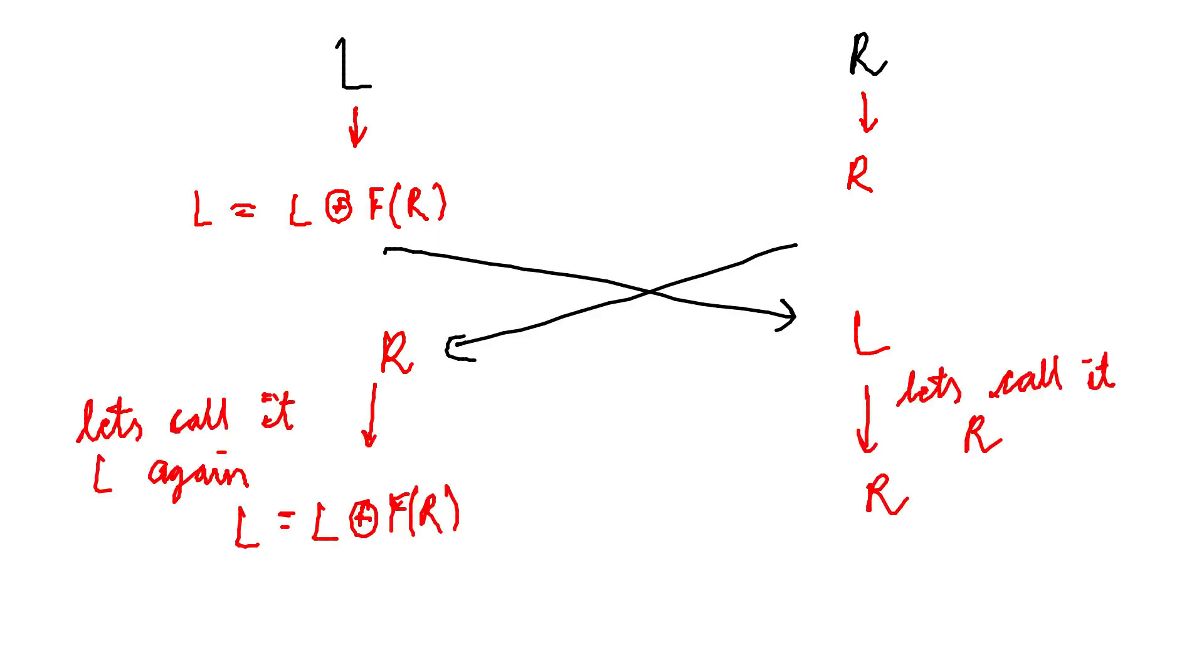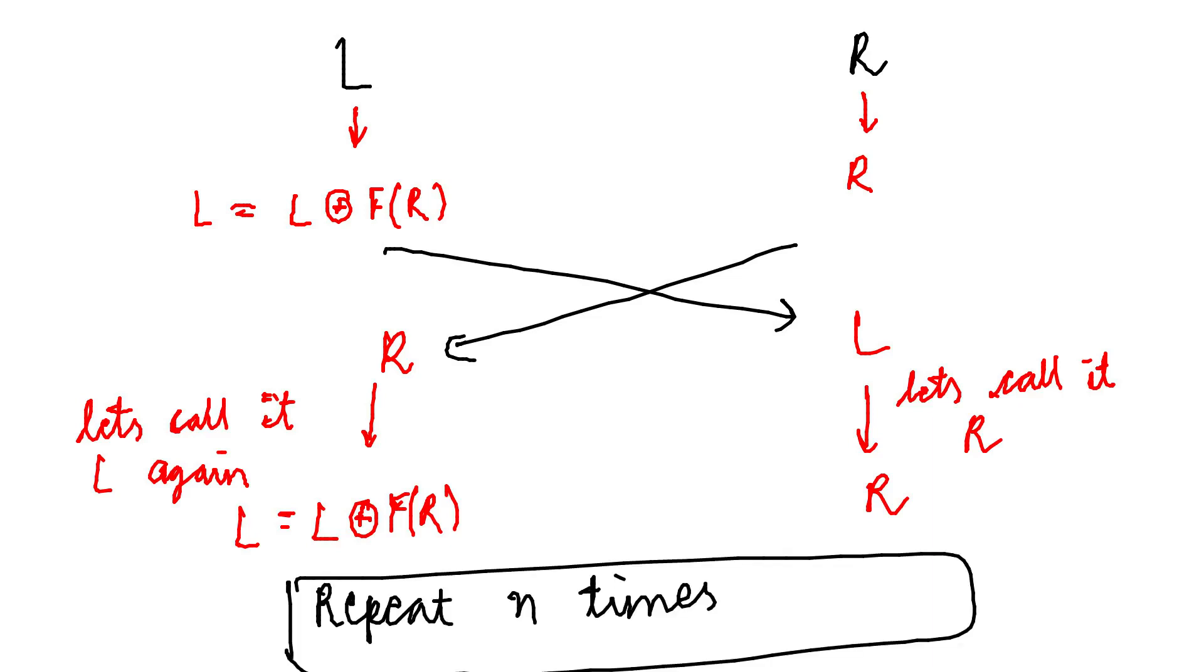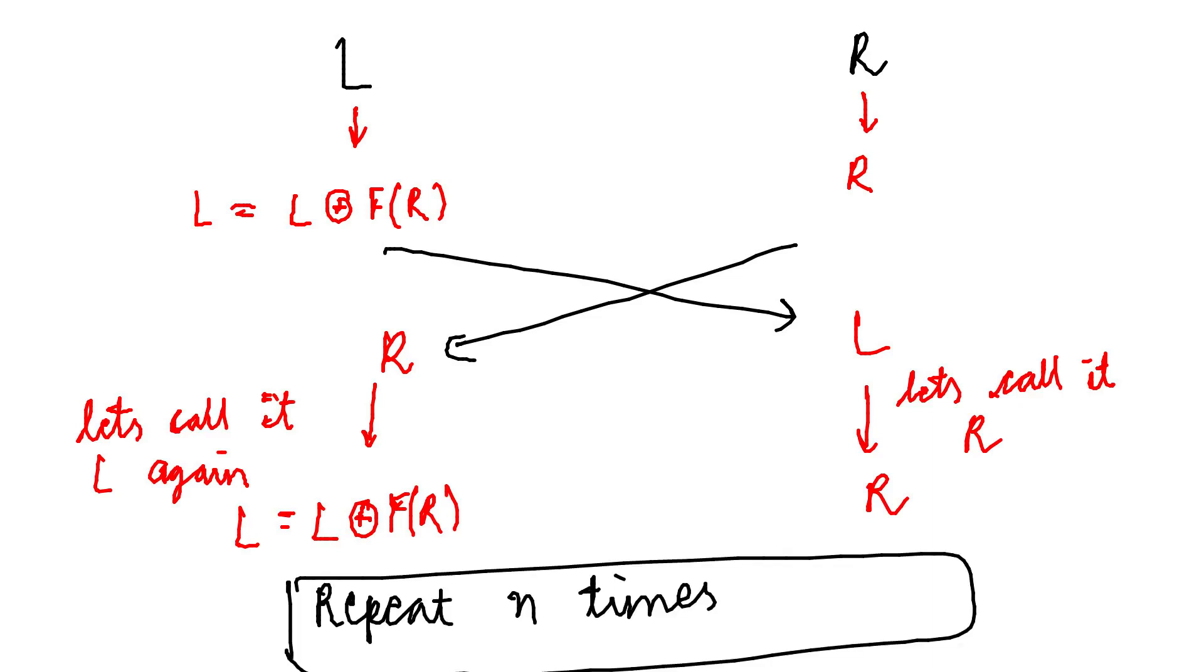Again you perform L XOR F of R. This gets repeated n number of times depending upon the strength you desire. Finally, you merge L and R to get 64-bit output block.